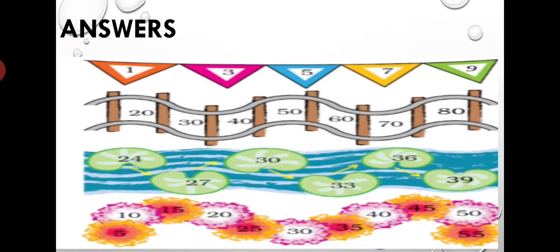Now you can check the answers: one, three, five, seven, nine. Twenty, thirty, forty, fifty, sixty, seventy, eighty. Twenty-four, twenty-seven, thirty, thirty-three, thirty-six, thirty-nine. Five, ten, fifteen, twenty, twenty-five, thirty, thirty-five, forty, forty-five, fifty, and fifty-five.